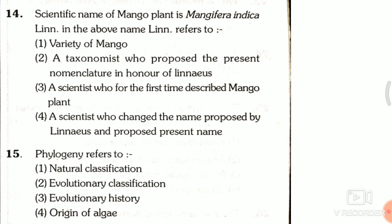Question 14: The scientific name of the mango plant is Mangifera indica Linn. In the above name, 'Linn.' refers to — first, variety of mango; second, a taxonomist who proposed the present nomenclature in honor of Linnaeus; third, a scientist who for the first time described the mango plant; fourth, a scientist who changed the name proposed by Linnaeus. The answer is the third one, a scientist who for the first time described the mango plant.